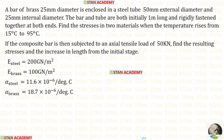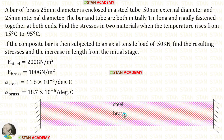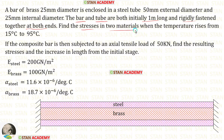Let us read the question one time. A bar of brass 25 mm diameter is enclosed in a steel tube of 50 mm external diameter and 25 mm internal diameter. The bar and tube are initially 1 meter long and rigidly fastened together at both ends. We have to find the stresses in both materials when the temperature rises from 15 degrees Celsius to 95 degrees Celsius.